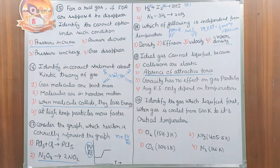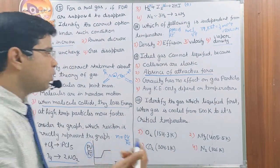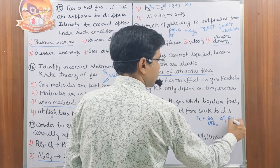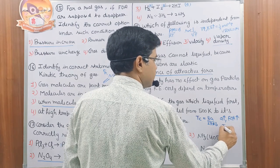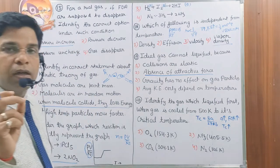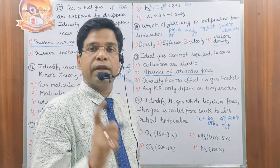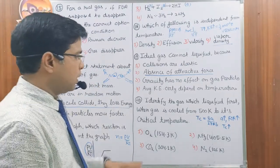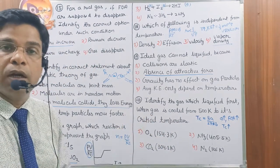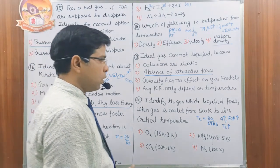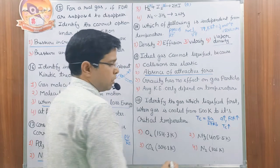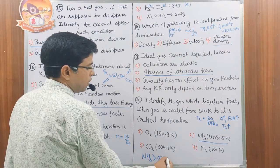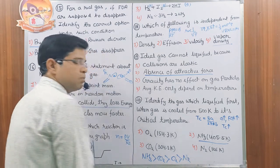Question 20: Identify the gas that liquefies first when cooled from 500 K to its critical temperature. Tc = 8a/(27Rb), so higher 'a' means higher Tc and easier liquefaction. Critical temperatures: O₂ = 154 K, CO₂ = 304 K, N₂ = 126 K, NH₃ = 405.5 K (ammonia has hydrogen bonding, giving the strongest force of attraction). NH₃ liquefies first. Liquefaction sequence: NH₃ → CO₂ → O₂ → N₂.